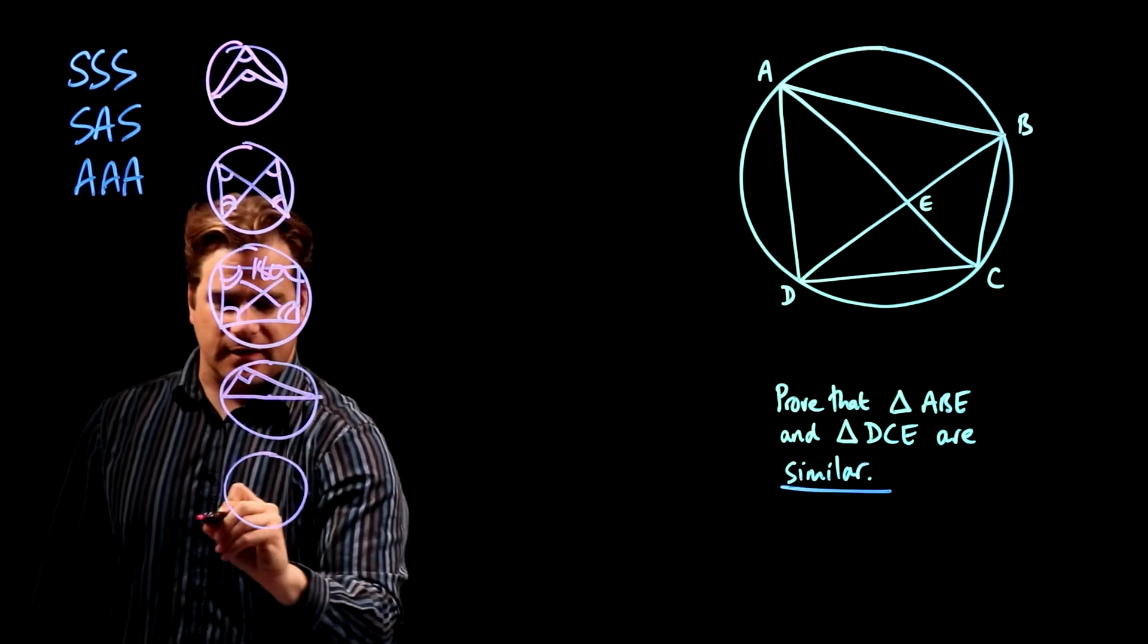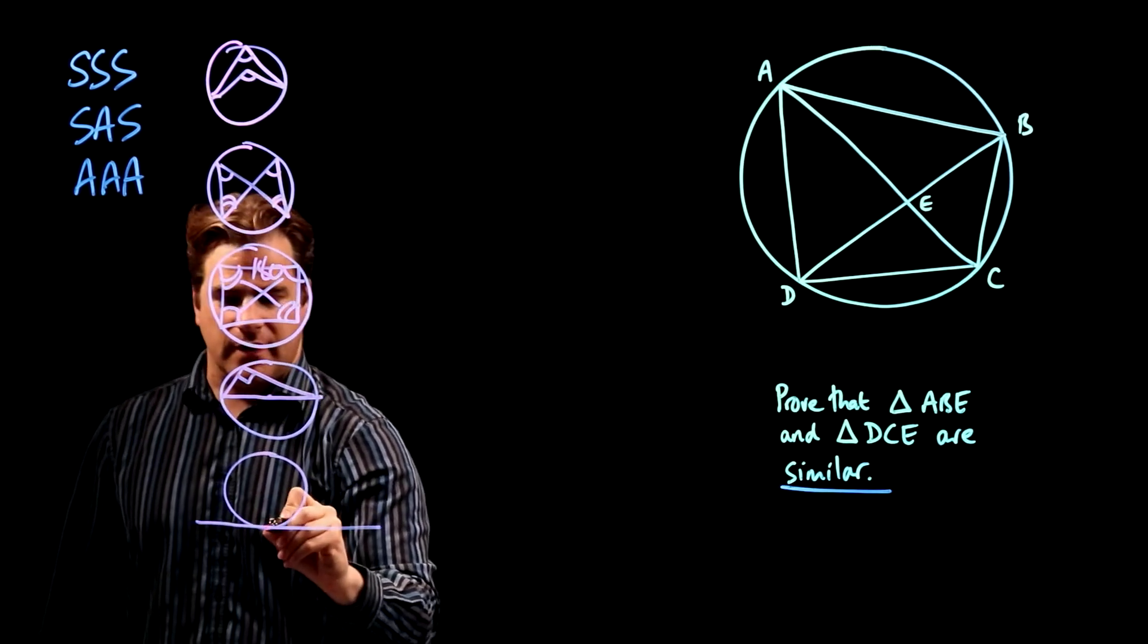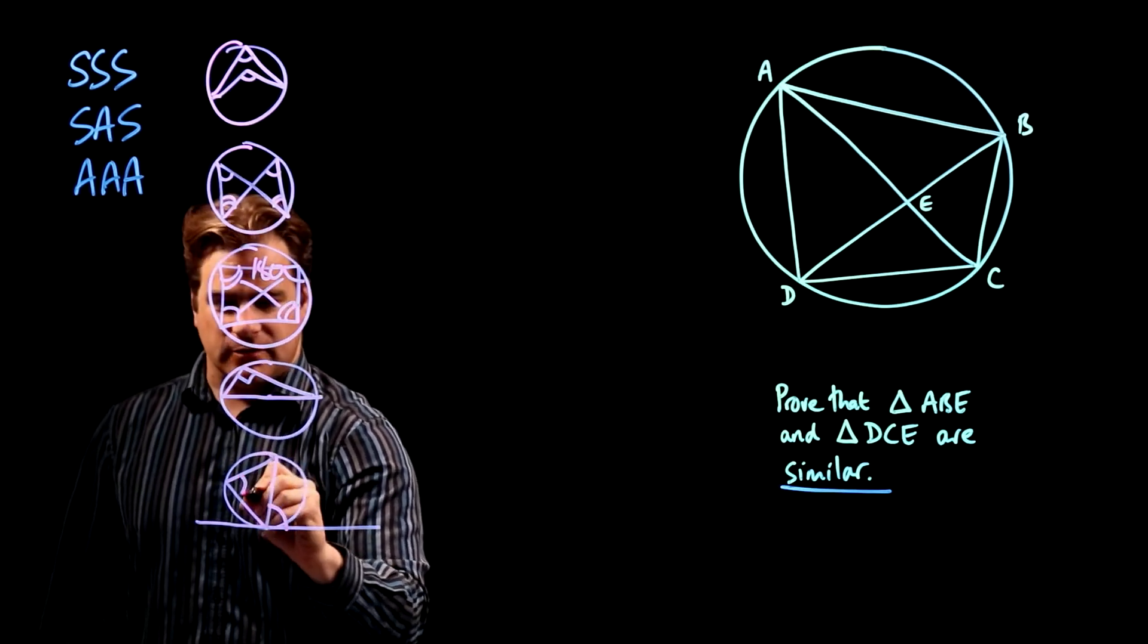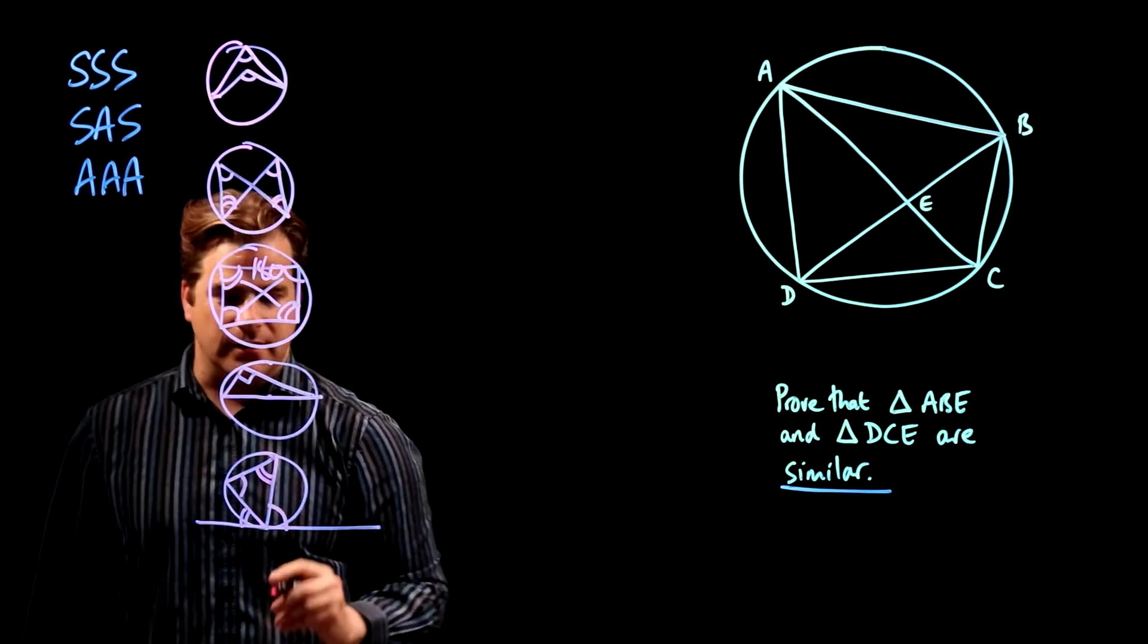And alternate segment theorem. There's a tangent, that point there. Draw a triangle like so. That angle is equal to that angle, and that angle equals that angle.